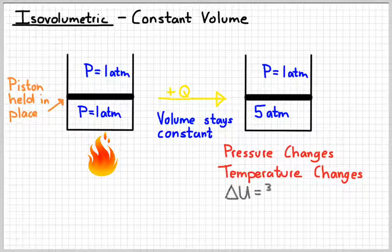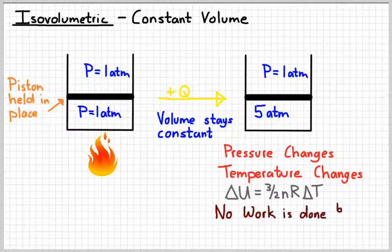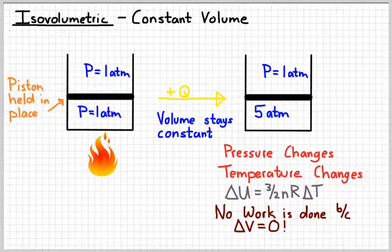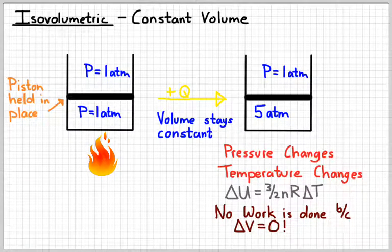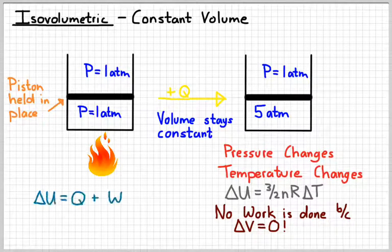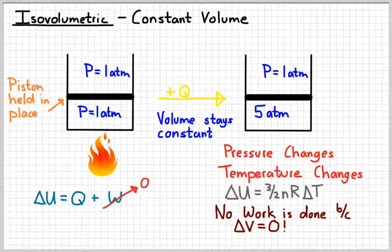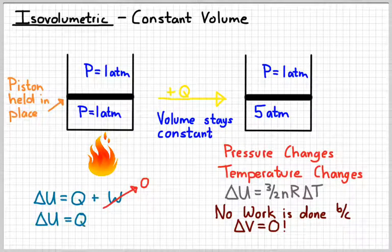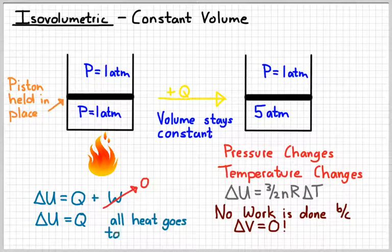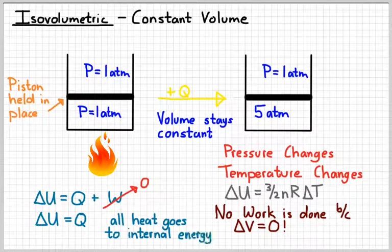And so we can find the internal energy change the same way, using delta U equals 3 halves n R delta T. Now the important thing to realize here is that there's no work done. There's no change in volume, meaning there's no movement. So no work is being done. So in our first law equation, delta U equals Q plus W, W is zero, meaning delta U equals Q. In other words, all the heat that we added from that flame went into increasing the internal energy of the gas. The gas got hotter. So that's an isovolumetric process.